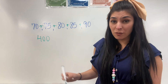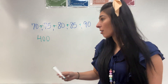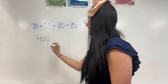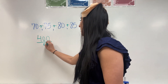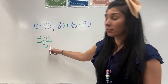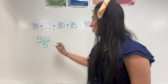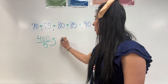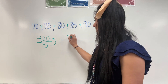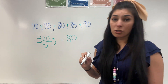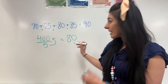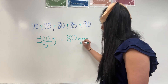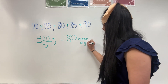Now to find the average, I need to divide by how many numbers there are. There are five numbers, so I'm going to divide by five. Even though it looks like a fraction, that means division. How many times does five go into 400? That's going to give us 80. So 80 is our mean or our average.